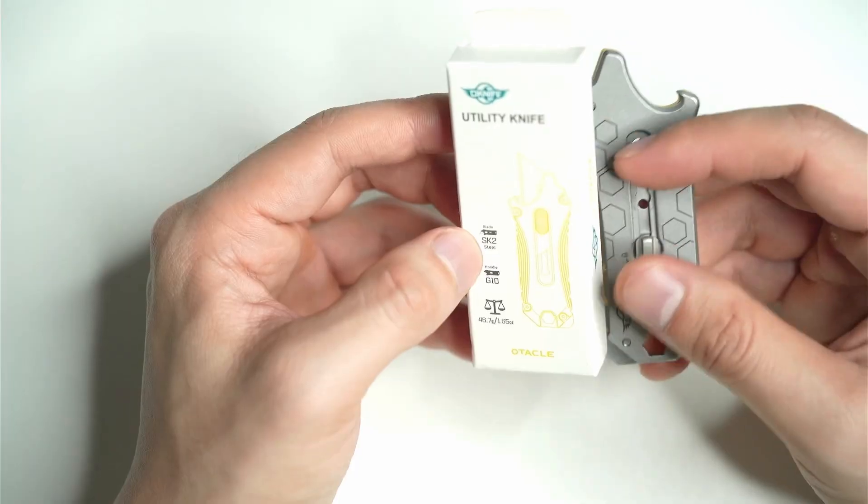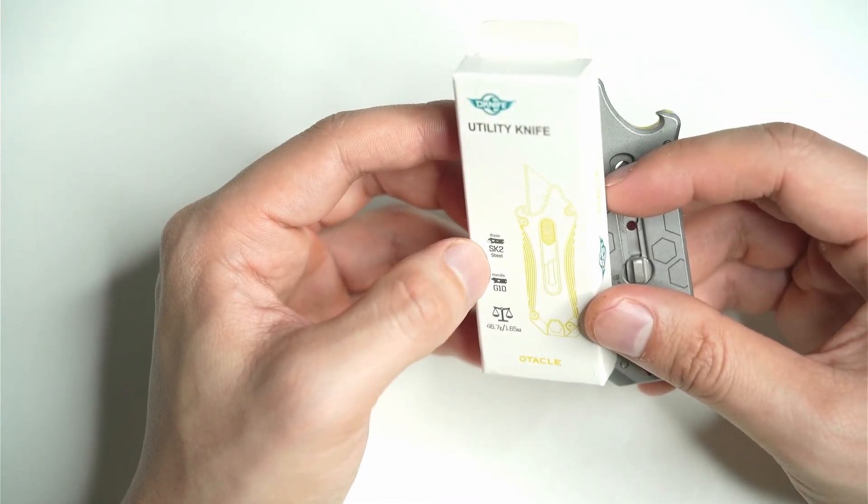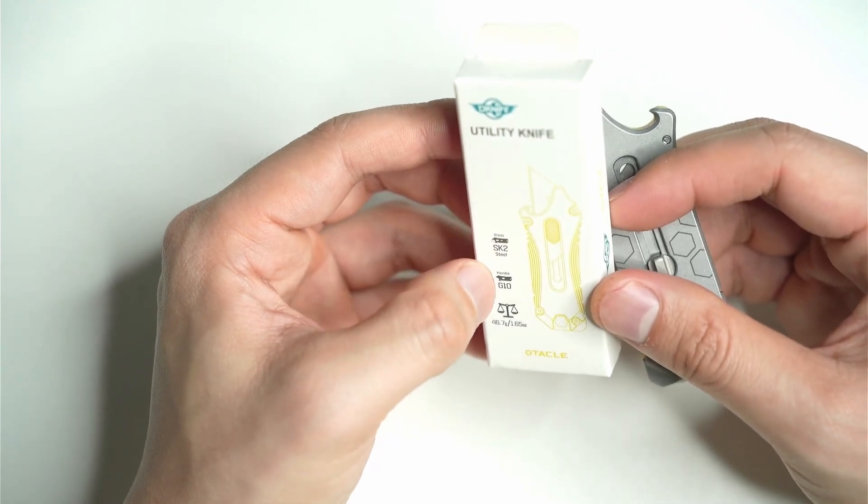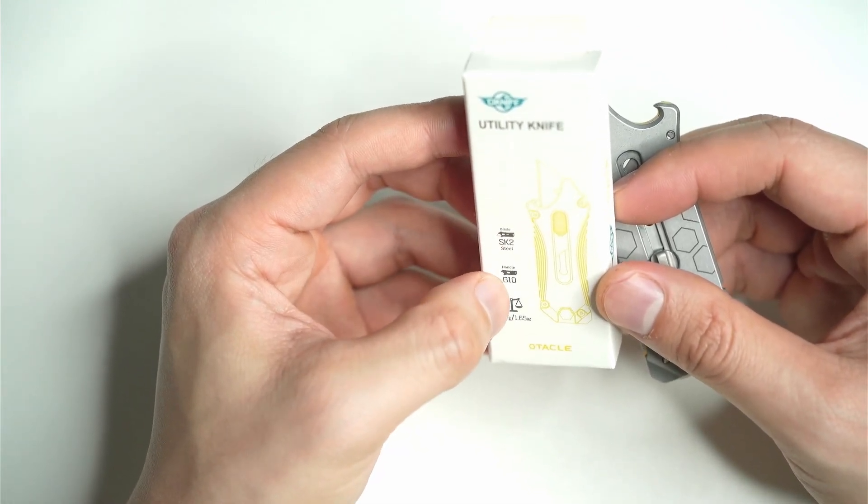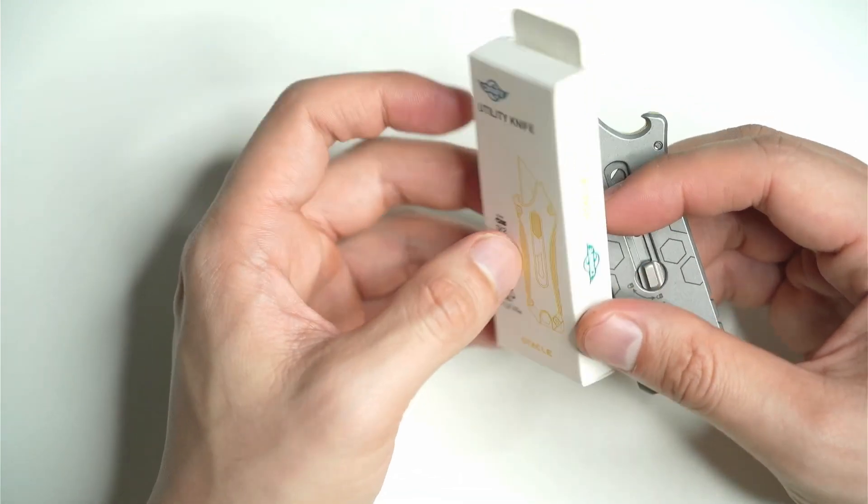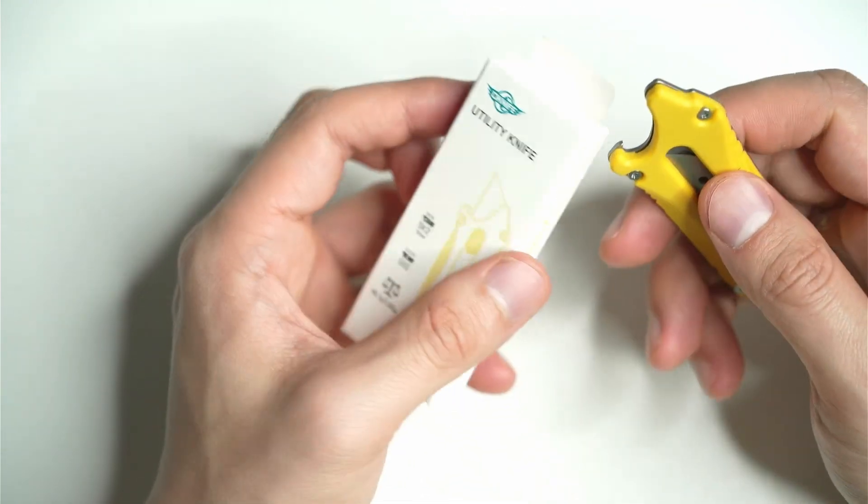This is the box that it comes in. SK2 steel for the blade itself. Not really sure what that means, but you've got the handle made of G10 stainless steel. 46.7 grams. That's pretty much it.